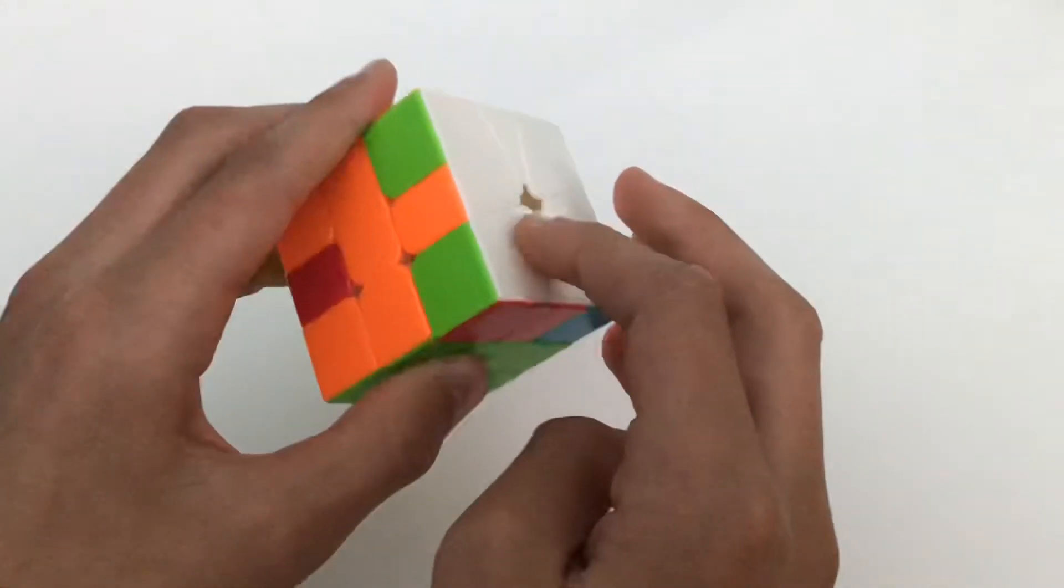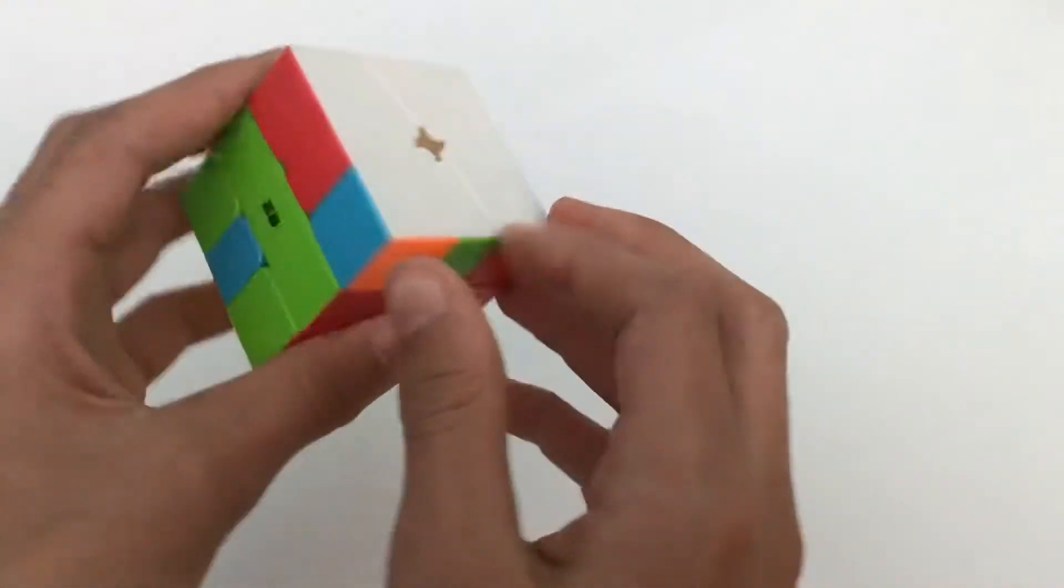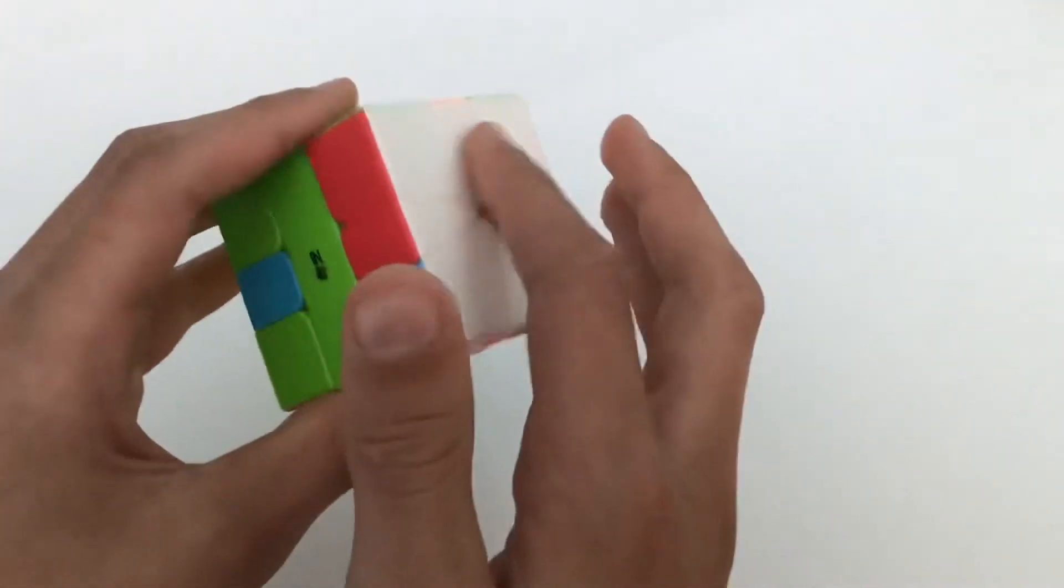But for square one it's different because you can't use those slice moves.